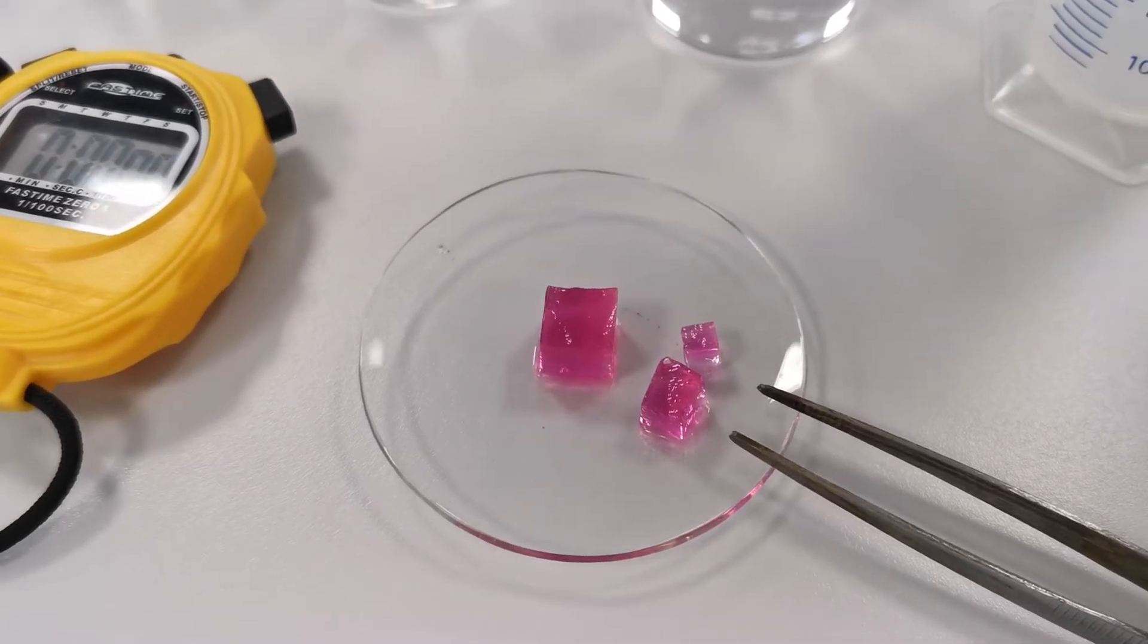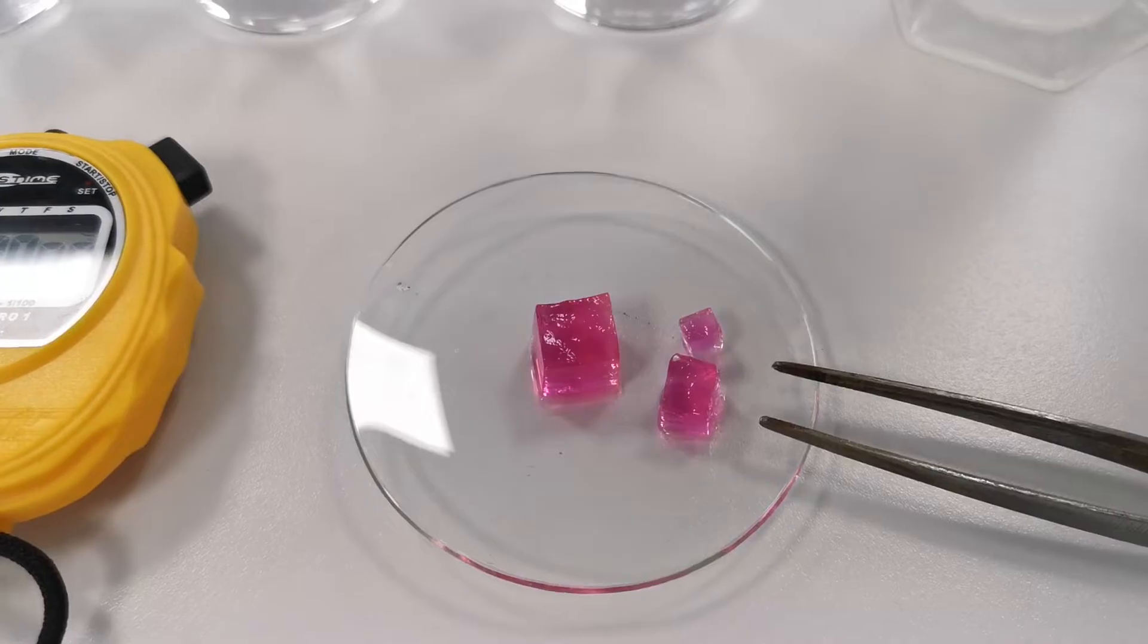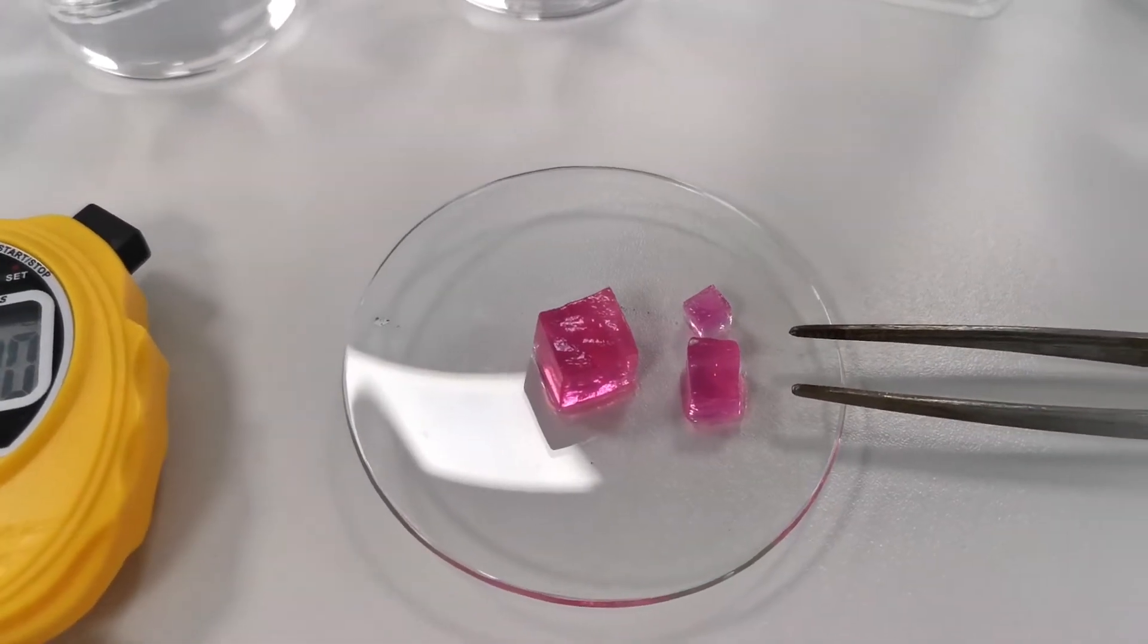As you can see we have three agar cubes here, small, medium, and large. Each cube has the same composition, they all contain phenolphthalein, but they differ in size.